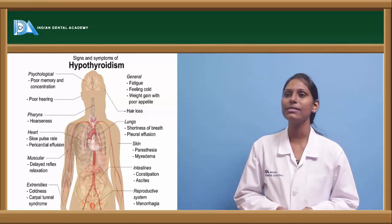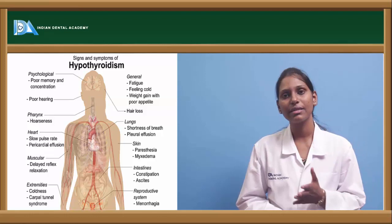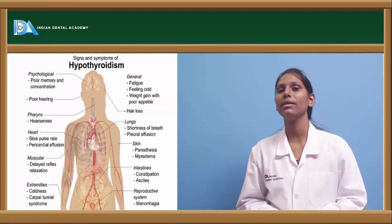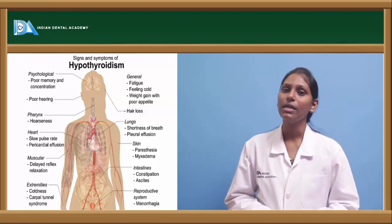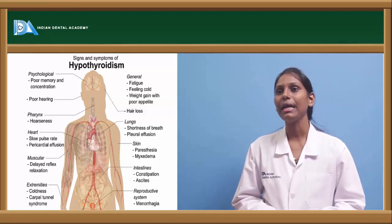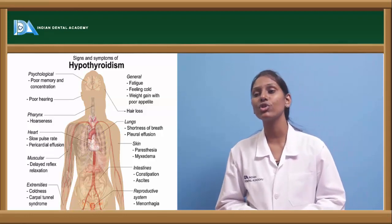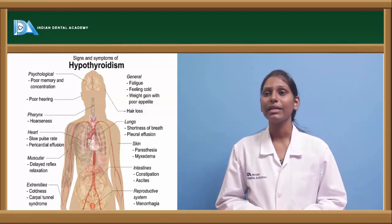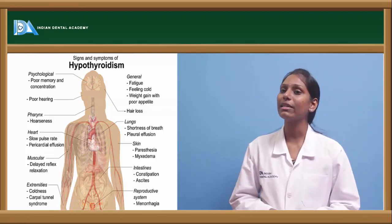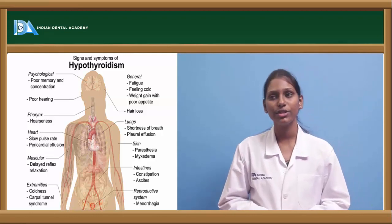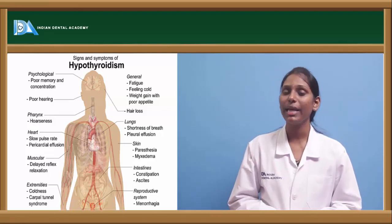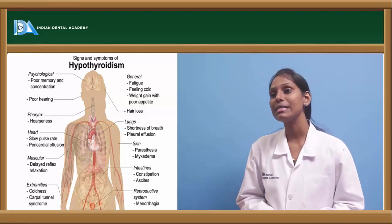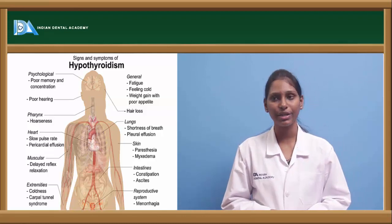Signs and symptoms of hypothyroidism affect every body system. Psychological symptoms include poor memory and concentration, poor hearing. Pulmonary effects include shortness of breath and pleural effusion. Other features include hoarseness of voice, slow pulse rate, pericardial effusion, delayed reflex reaction, coldness, carpal tunnel syndrome, fatigue, feeling cold, weight gain with poor appetite, constipation with ascites, and menorrhagia in the reproductive system.